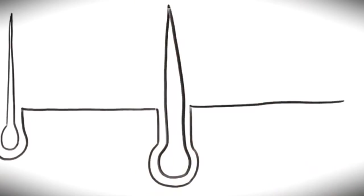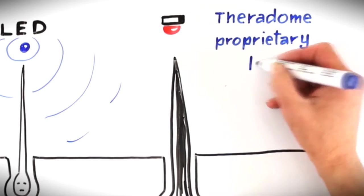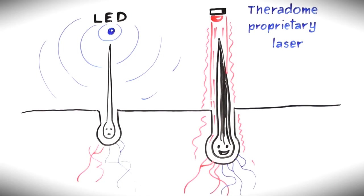Laser light, unlike light bulbs or LEDs, does not disperse. This coherence enables laser light to focus concentrated power within a small circumference.